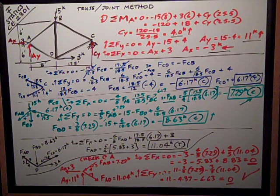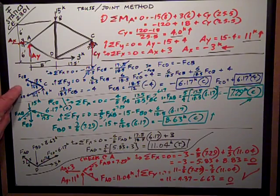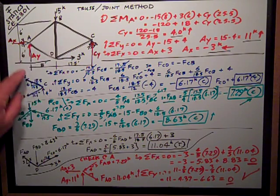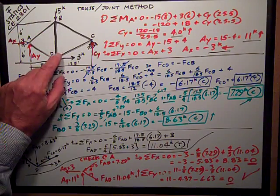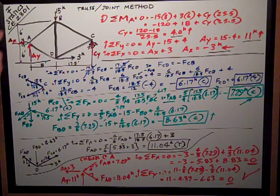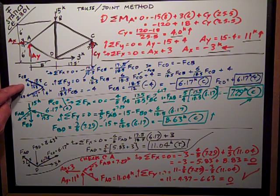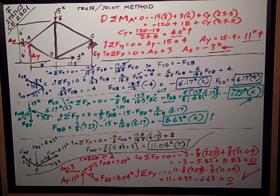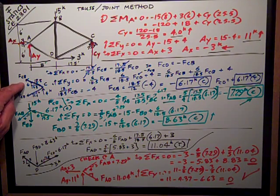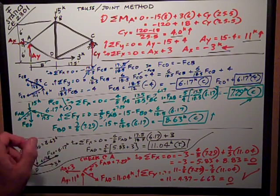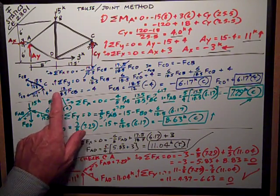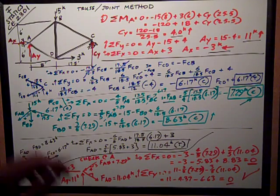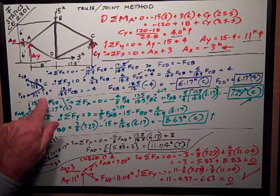Now I'm ready to move on to joint number C. Here I did a free body diagram of it. Remember the geometry of these two members, BC and CD, are 6 vertical, 17.5 horizontal. Square root of the sum of the squares gives us 18.5 for the length of the hypotenuse. So I've shown that on my free body diagram because I like to have that information there. I've assumed all my forces in my members unknown as tension, and I'll let my signs tell me otherwise if that's the case.